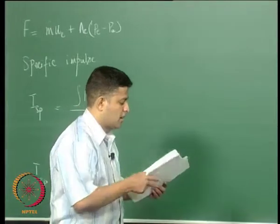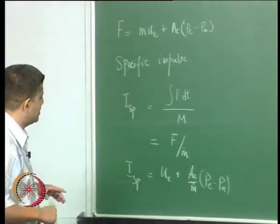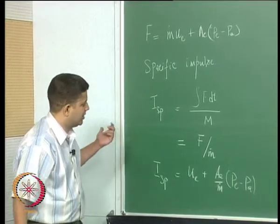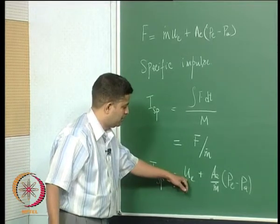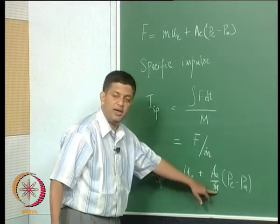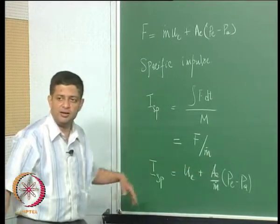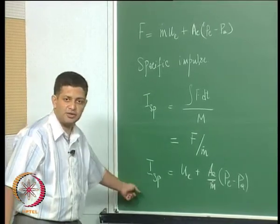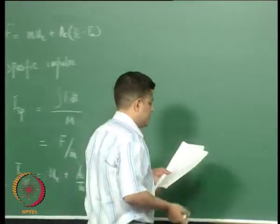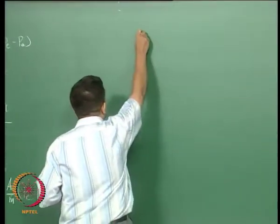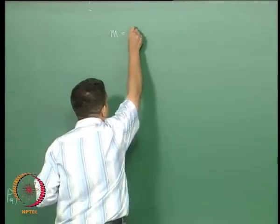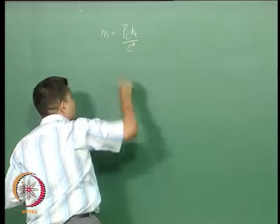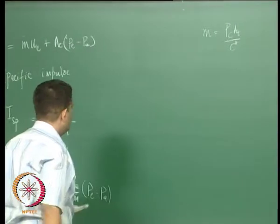Now let us look at how to proceed further and get an expression for ISP. If you look at this equation, we know the expression for ue, we know m_dot, and we know PE by PC in terms of AE by AT. We will use those to get an expression for ISP now. m_dot, as we derived in the last class, is equal to PC·AT divided by C star.